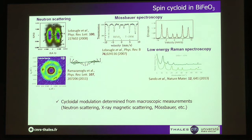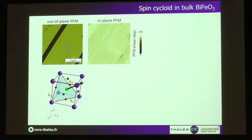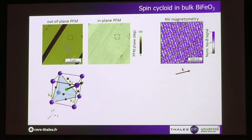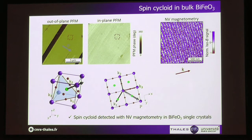This spin cycloid has been characterized mainly by macroscopic techniques such as neutron scattering or Mössbauer spectroscopy. We recently looked at single crystals of bismuth ferrite provided by Michel Viret to see if we could obtain information on the local magnetic textures. The crystals have large domains with 71-degree domain walls. The NV magnetometry signal showed a clear modulation of the stray field, indicating a spin cycloid on the surface. Looking at the geometry, we understand that this cycloid propagates not exactly on the surface but is slightly tilted, and the period corresponds to what we would expect.